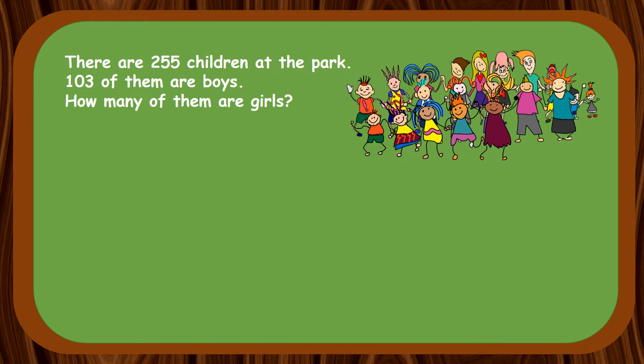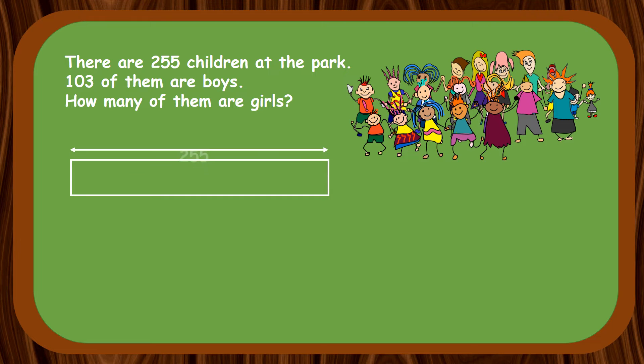There are 255 children at the park. 103 of them are boys. How many of them are girls? Let's draw the model to show the relationship between the number of boys, number of girls and total number of children at the park.